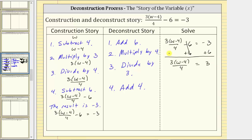Step two is to multiply both sides of the equation by four. Notice how we're changing the order of the multiplication using the commutative property. We can write four as four over one. Simplifying on the left, four divided by four simplifies to one. The left side simplifies to three times the quantity w minus four equals, on the right side, three times four is 12.